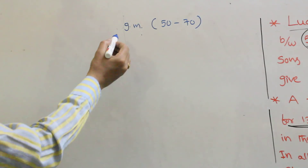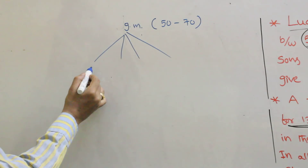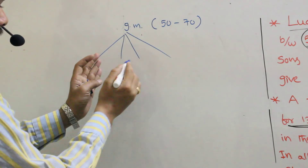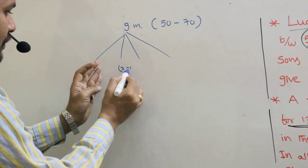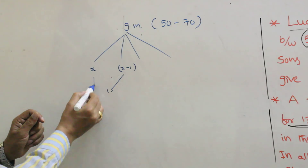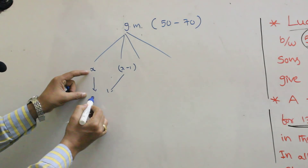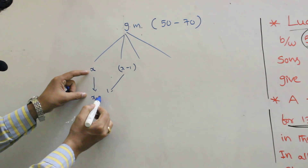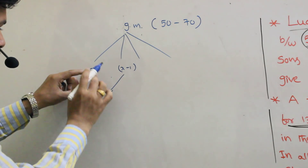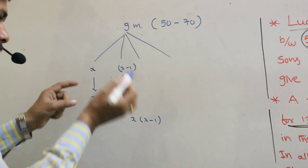How many sons? We don't know. So let the number of sons be X. How many brothers will there be? X minus 1 brothers. The number of brothers equals the number of grandsons each son has. So how many grandsons will there be? X into (X minus 1) grandsons.